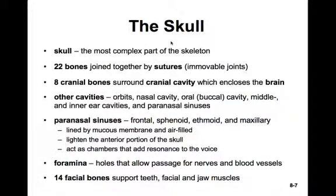The skull is certainly the most complex part of the skeleton, so it can be a little overwhelming to start here. But once you've got the skull under control, the rest should be easy. The skull is composed of 22 different bones joined by sutures, which are immovable joints. There are eight cranial bones that surround the cranial cavity and enclose the brain, and 14 facial bones that support the teeth. There are lots of different cavities in the skull: the orbits, the nasal cavity, the oral cavity, the middle and inner ear cavity, as well as the paranasal sinuses.